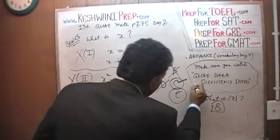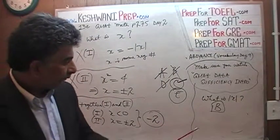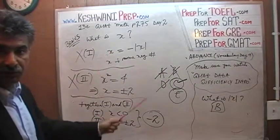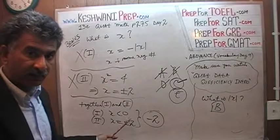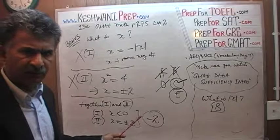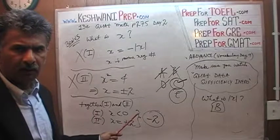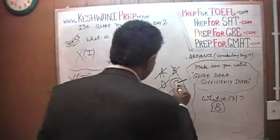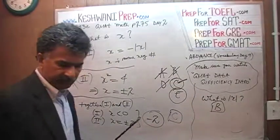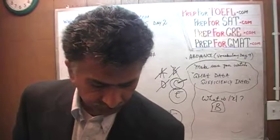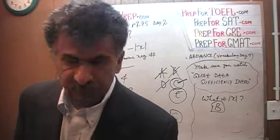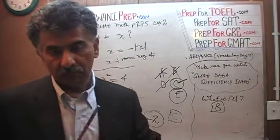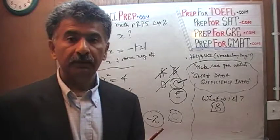The way the question was given in the book, the answer is B. The way I put down the bonus question without the absolute sign, the entire scenario changes. This is an entirely different situation. In the bonus case, the answer is C — meaning both statements together are needed to answer the question. X is negative 2. All right, I'll see you tomorrow. Bye now.